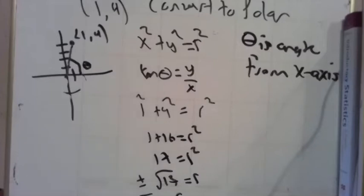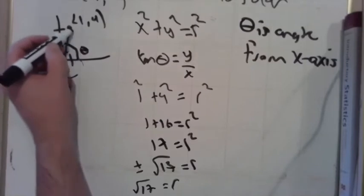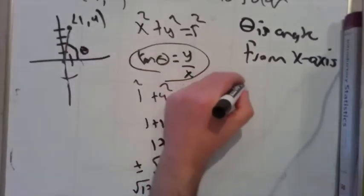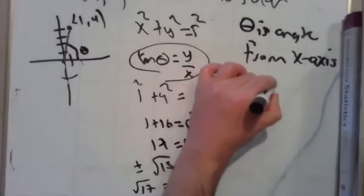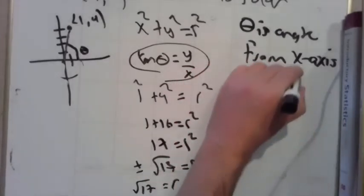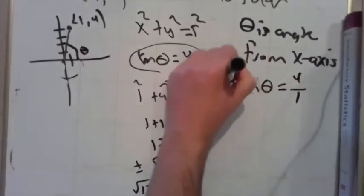So I'm going to use r is square root of 17. I'll type that in a calculator in a minute. And then I'm going to use this to find my angle. So tangent of theta will be the y over the x. So both of these are true statements.